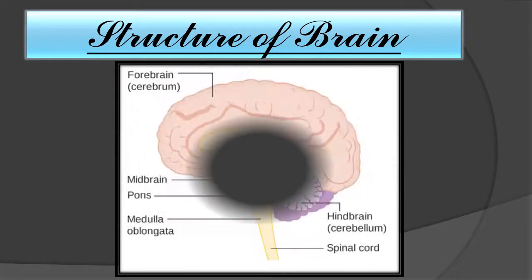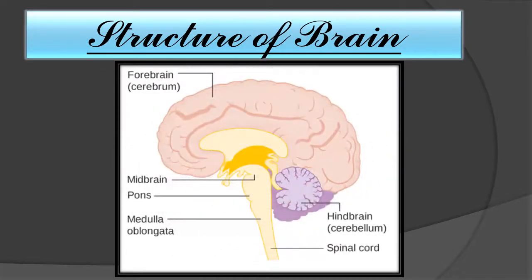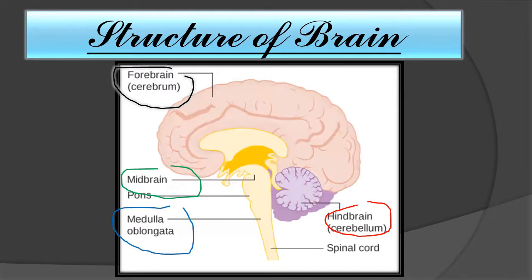There are different parts of the brain: the forebrain, which includes the cerebrum; the midbrain; and the hindbrain, which includes the cerebellum and medulla oblongata. The spinal cord continues downward from the brain into the body.